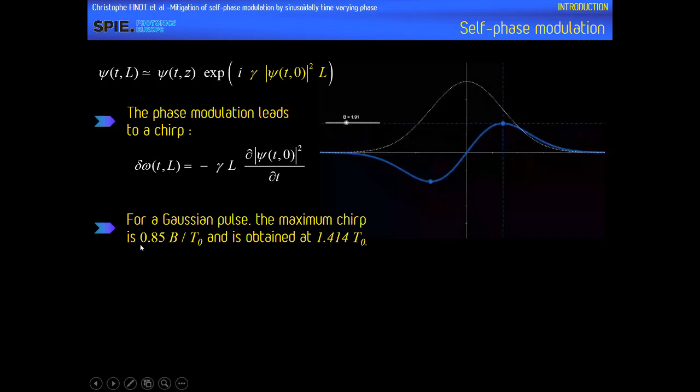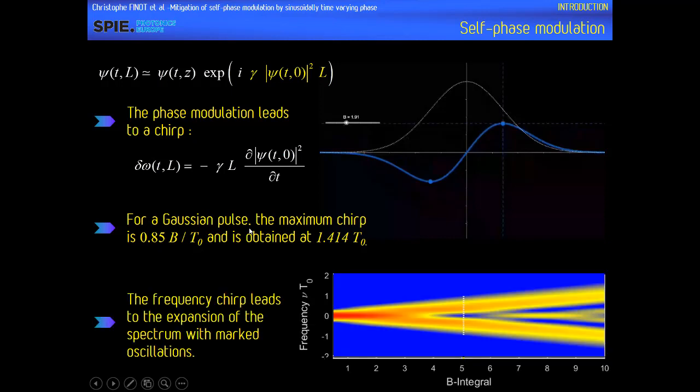Here is the result that can be derived for a Gaussian input pulse. As a consequence of the chirp, the spectrum of the pulse will be changed by the nonlinearity — the spectrum will broaden and it will experience some very strong fluctuations. Of course, if you want to propagate a pulse without distortion, you may want to mitigate the consequences of these self-phase modulations.